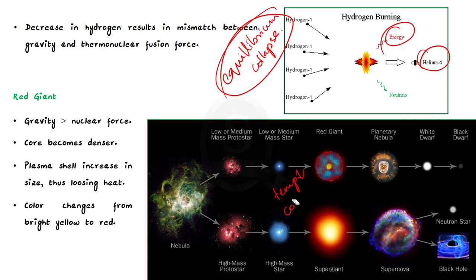As the temperature decreases, the color of the star changes from bright yellow to red. In this phase, the star is called a red giant. A normal sized star turns into a red giant, and a massive star turns into a super massive red giant or supergiant.